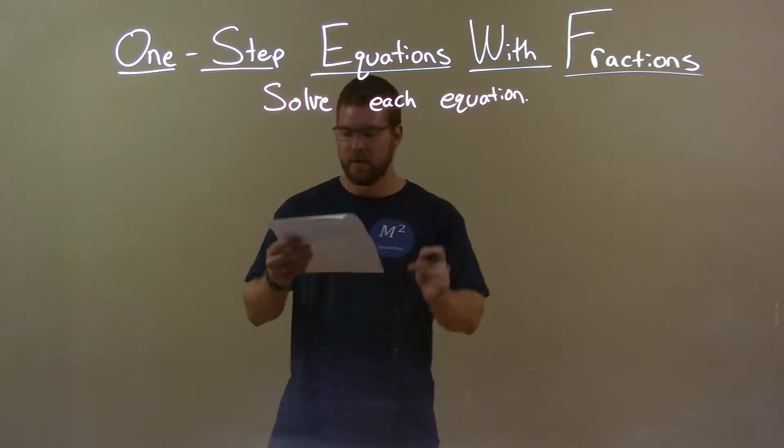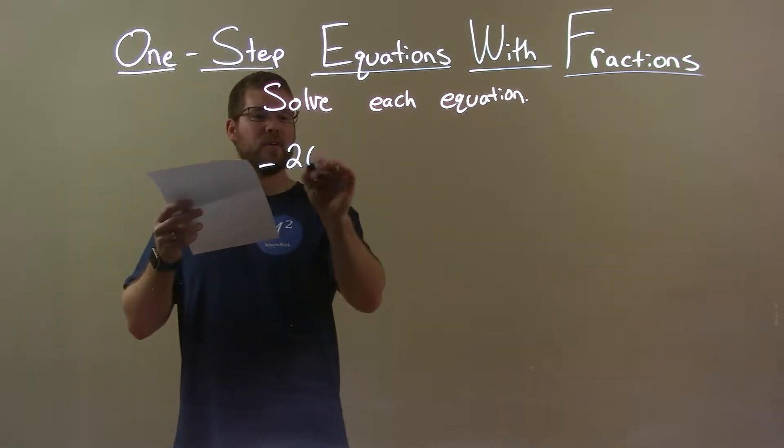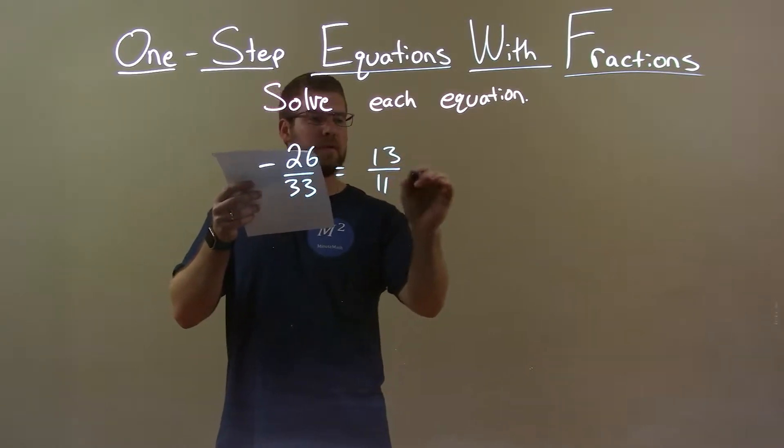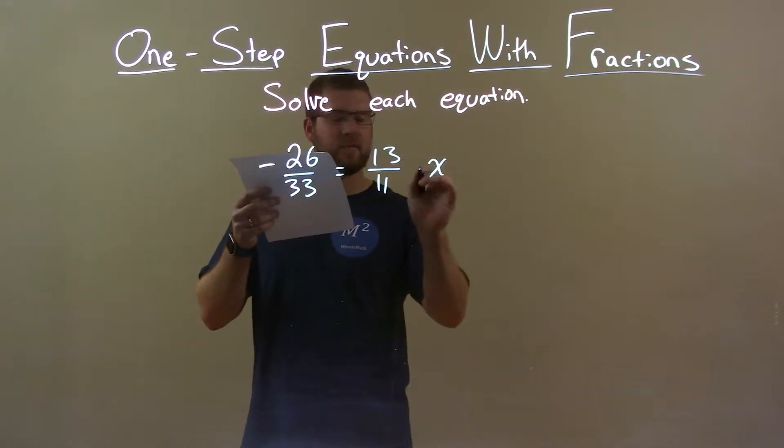If I was given this equation negative 26 over 33 is equal to 13 over 11 times x, alright?